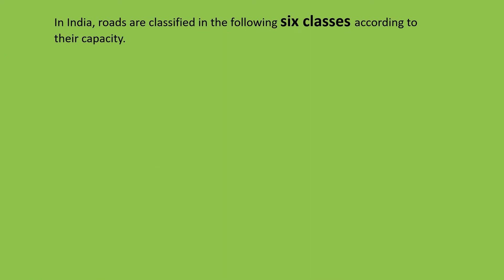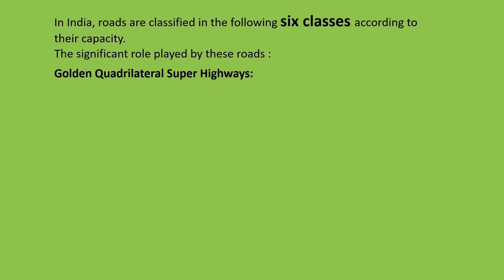In India, roads are classified into the following six classes according to their capacity. The first is Golden Quadrilateral Super Highways — very important.